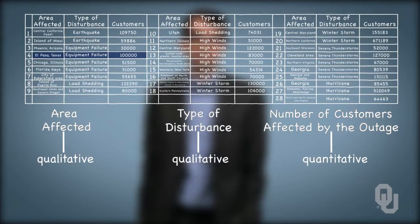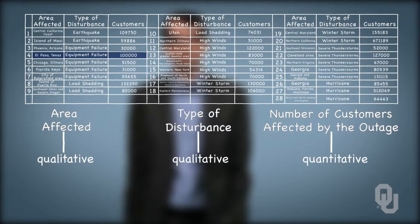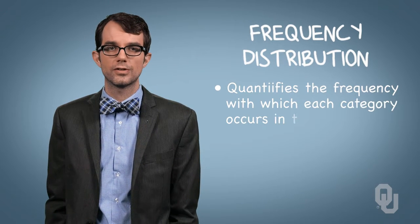We don't have a lot of options for depicting qualitative data, but we'll use the type of disturbance variable for the ones that we do. The first means to display qualitative data is with a frequency distribution, which lists all the categories and the number of observations that belong to each of the categories. A frequency distribution essentially quantifies the frequency with which each category occurs in our sample.